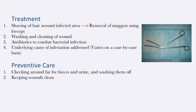The treatment of wound myiasis typically involves the shaving of the hair around the infected area to improve visibility of the affected site. This is followed by the removal of the maggots using a pair of forceps. The wound is also typically washed and cleaned, and antibiotics are often prescribed to help combat bacterial infection. Upon the removal of the maggots, the underlying cause of the infestation would then also have to be addressed.